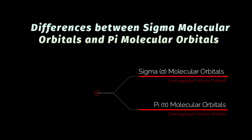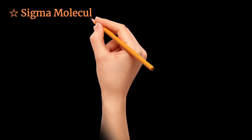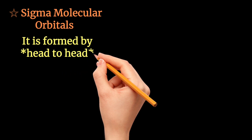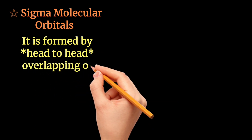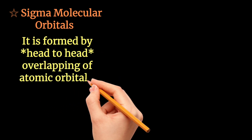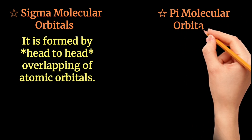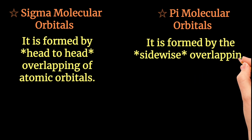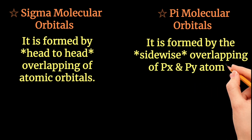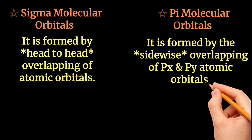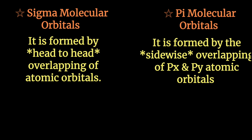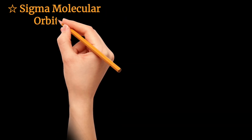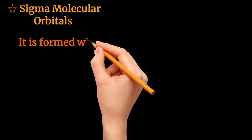The first point of difference: sigma molecular orbitals are formed by head-to-head overlapping of atomic orbitals, while pi molecular orbitals are formed by sideways or lateral overlapping of px and py atomic orbitals.